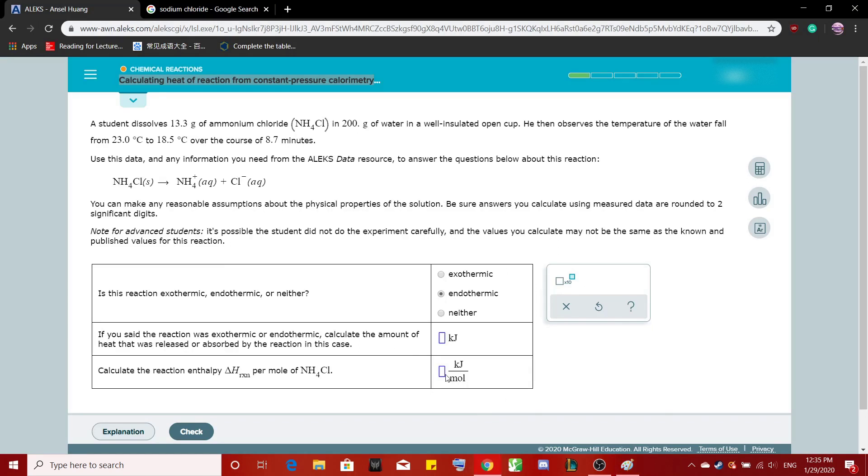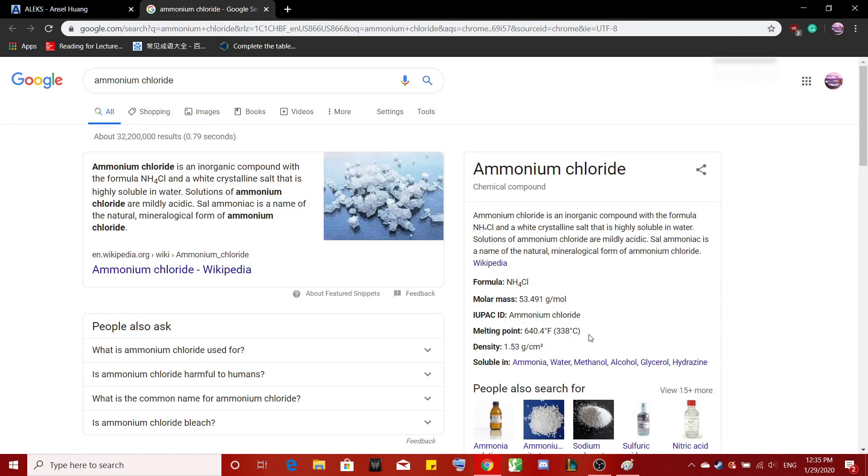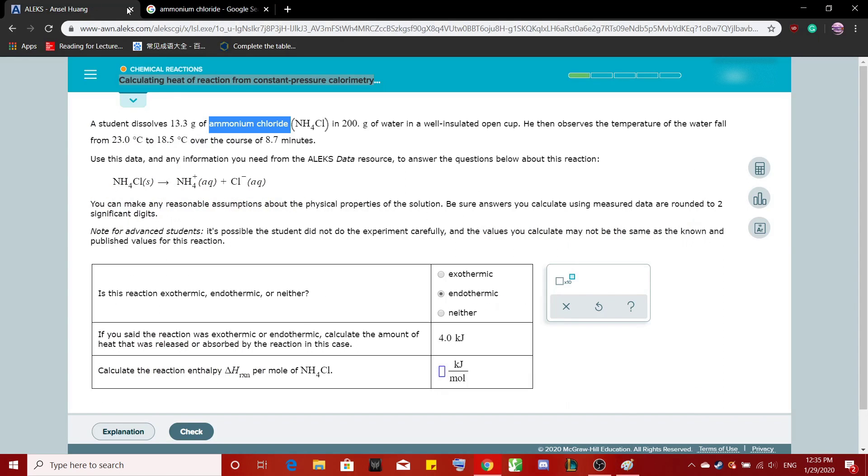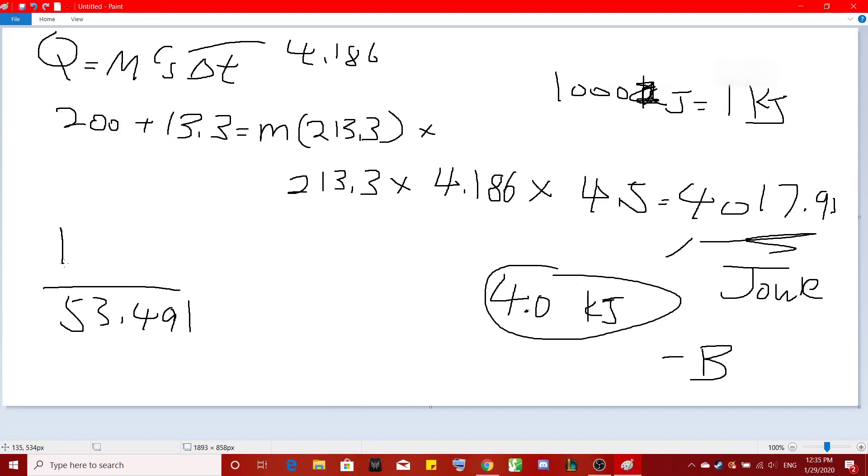And then calculate the enthalpy of reaction per mole of NH4Cl. So number one, how much does ammonium chloride weigh? Okay, ammonium chloride's molar mass is 53.491. That's the molar mass.